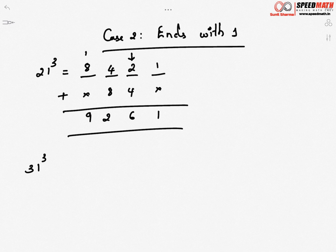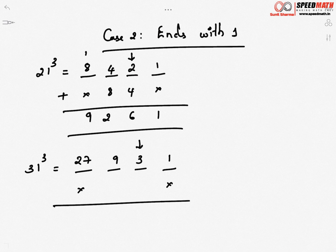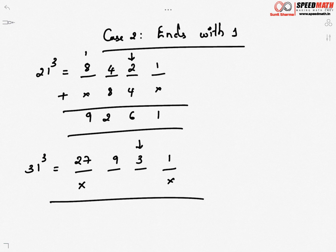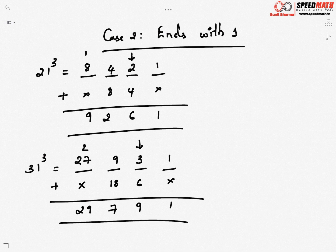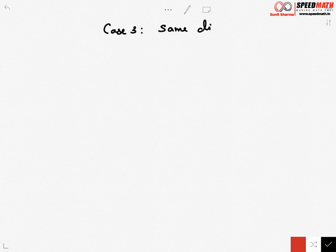One more example: 31³. Again four positions. Last two positions are 3 and 1. Second position: 3² = 9. First position: 3³ = 27. Leave first and last, double the middle — 9 doubled is 18, 3 doubled is 6. Add everything: 1 stays, 3 + 6 = 9, 18 + 9 = 27 (write 7, carry 2), 27 + 2 = 29. So 31³ = 29791.